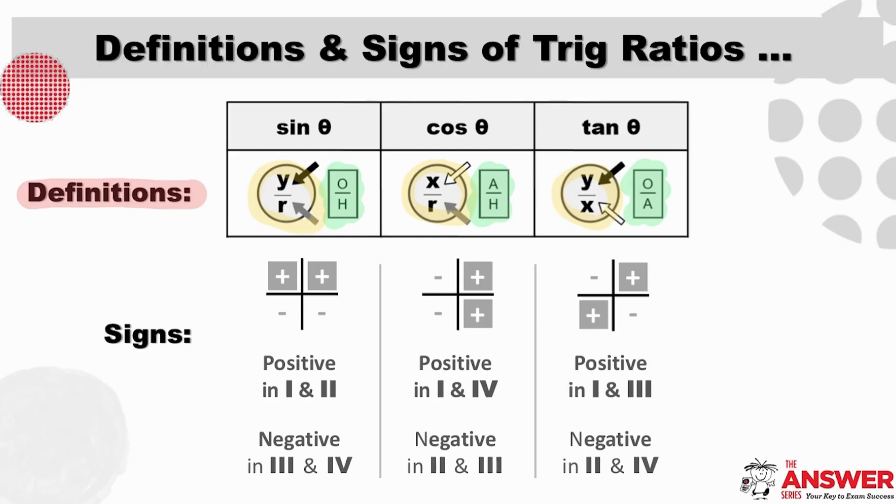And using the X, Y, and R definitions, for example, help you to understand why each of the ratios are positive and negative in the respective quads. So, sine first, which is Y over R.